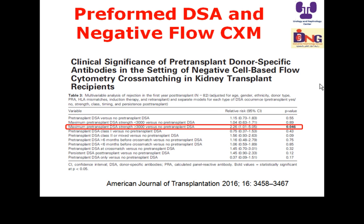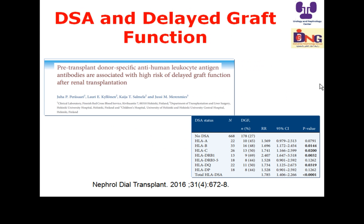Even if flow cytometry cross-match is negative, the presence of DSA strength above 3,000 MFI is associated with increasing hazard risk of rejection in multivariate analysis. Therefore, even with a negative flow cytometry cross-match, positive donor-specific antibodies carry a higher risk for acute rejection and must be considered. Additionally, the risk of delayed graft function is twice as high in patients with pre-formed DSA.